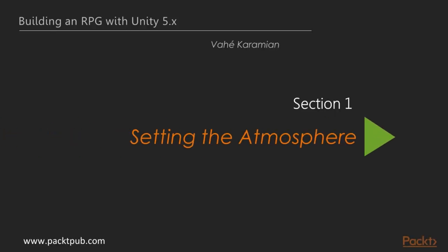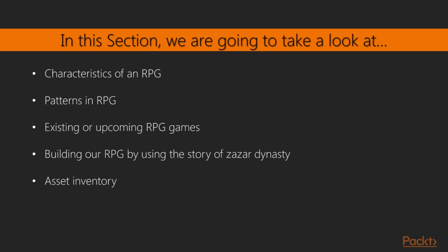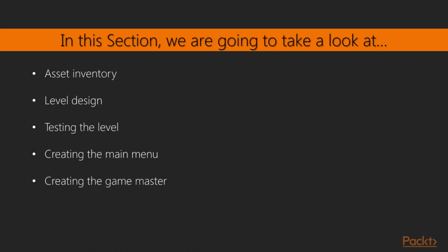Welcome to the first section of this course, Setting the Atmosphere. In this section, we're going to start laying the groundwork for our own RPG. We will first define the story of our game, define the plot, and define the quest that will make the game playable. We will look at the assets required to create an environment and characters and finally design the first level.